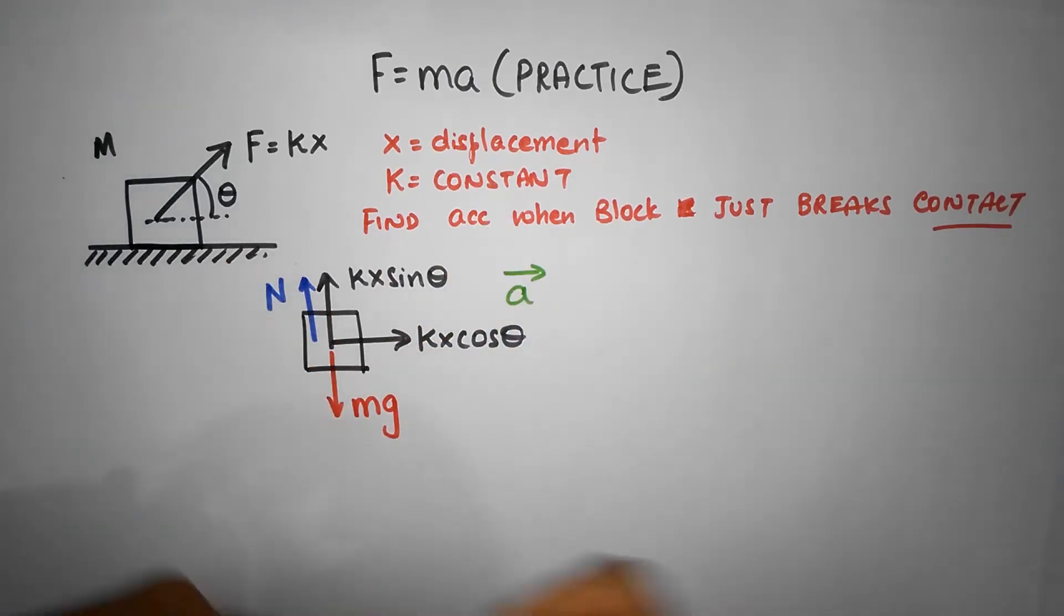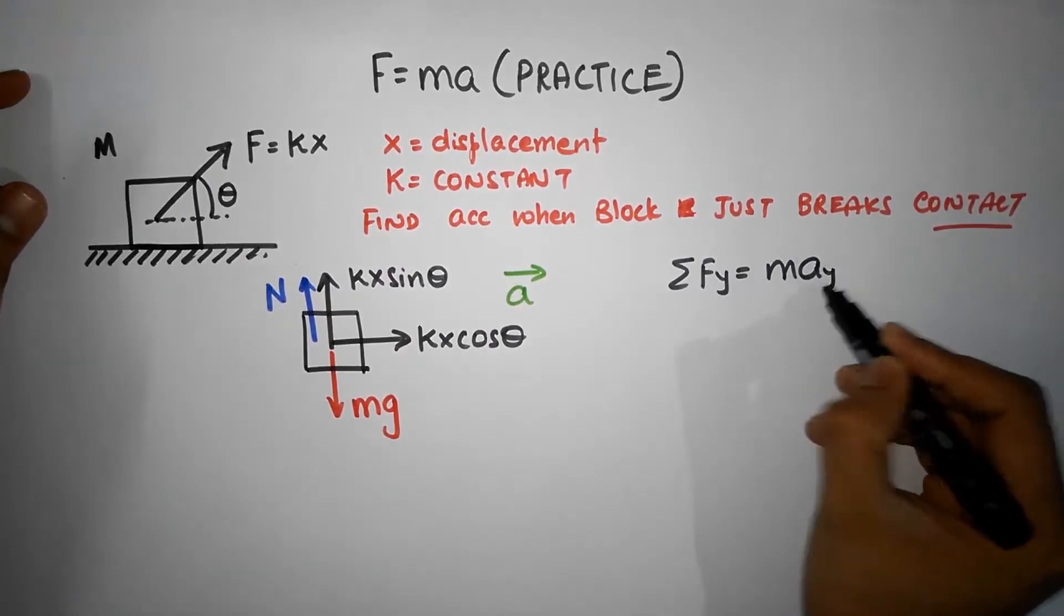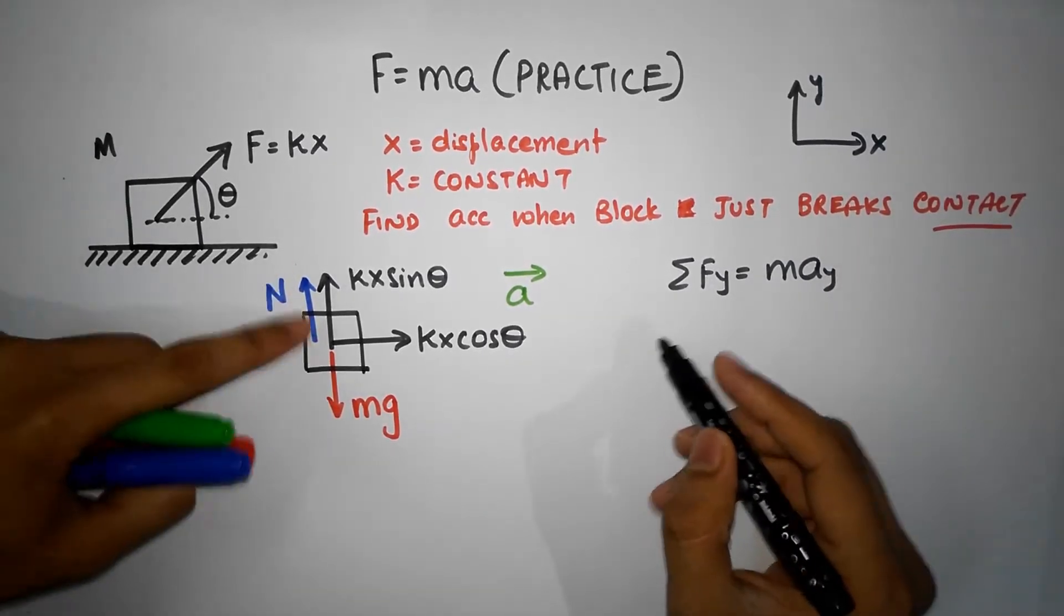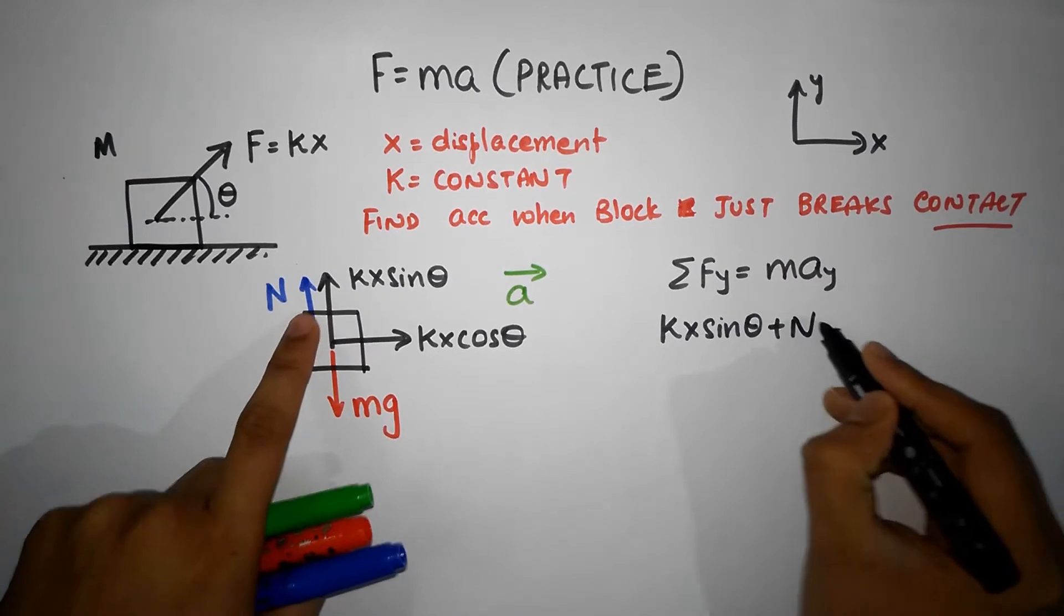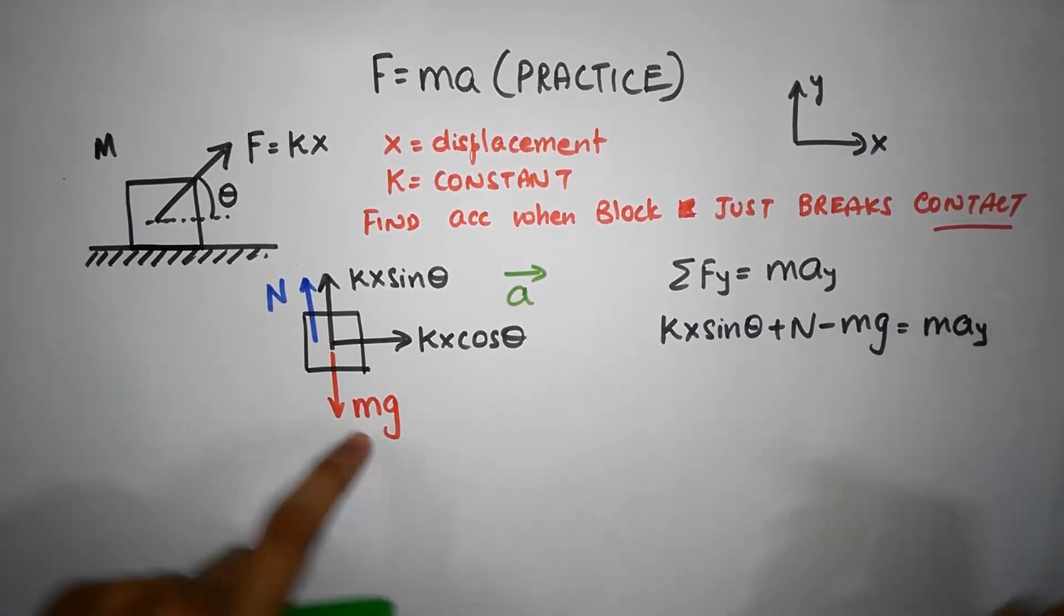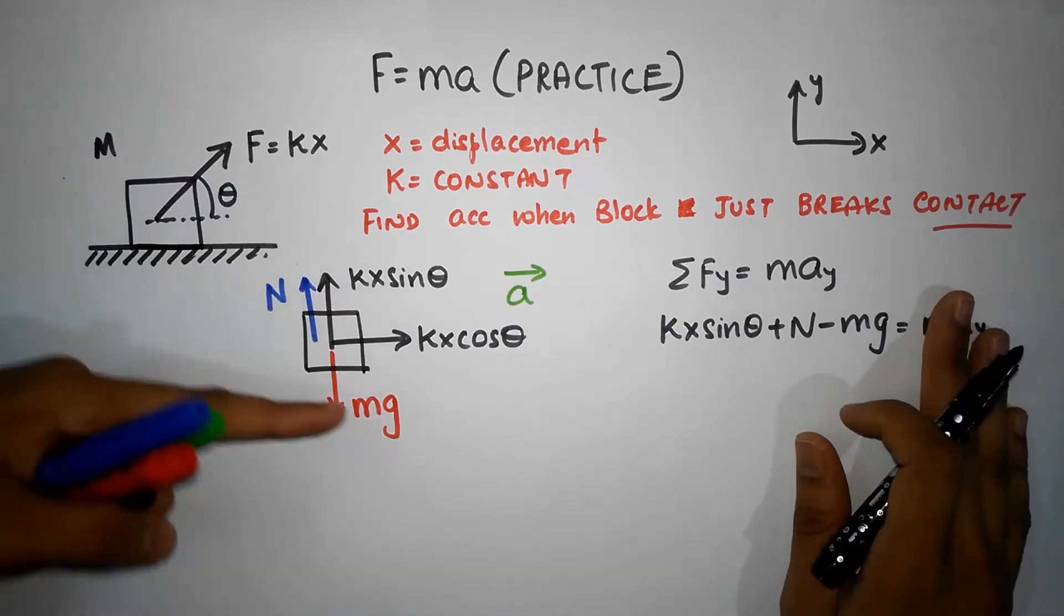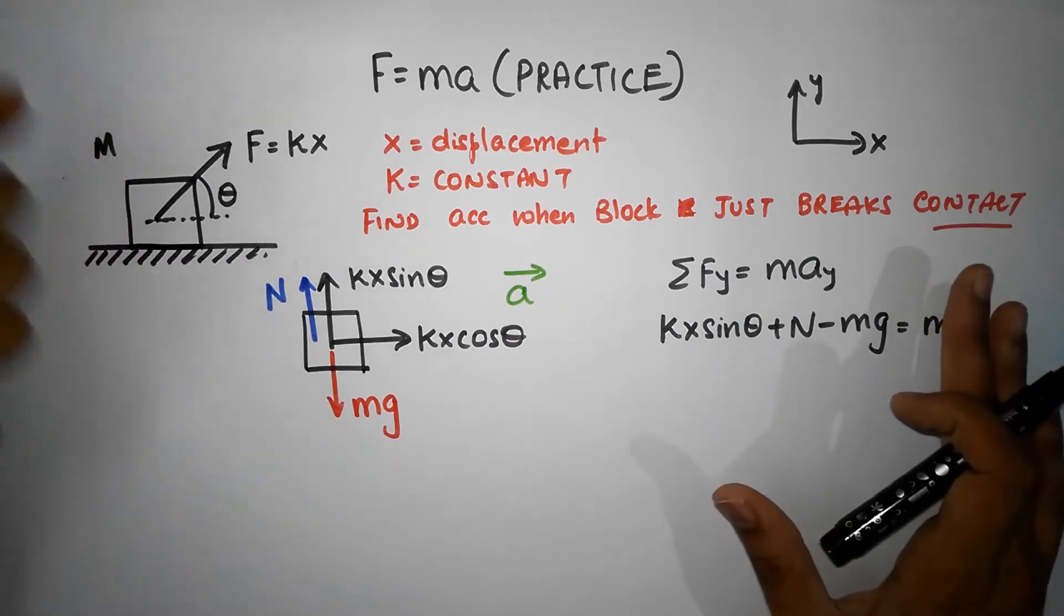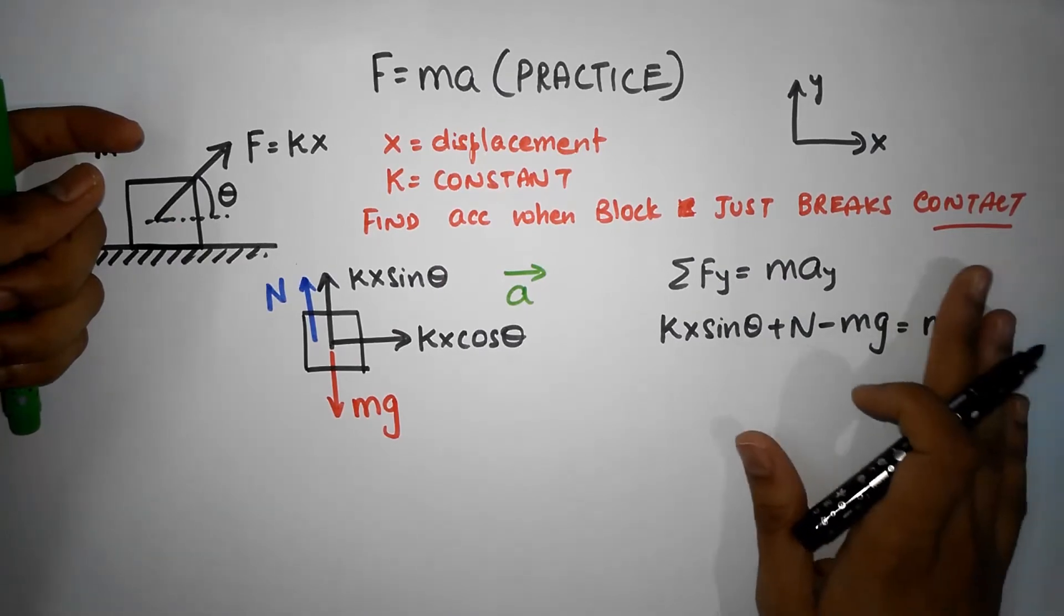If you look in the y direction, Sigma F_y equals m times a_y. I'm going to call this the y direction, this is my x direction. There are three forces acting: we have kx sine theta plus N minus mg, that should equal mass times acceleration along the y direction. Notice that acceleration along the y direction is zero as long as the block has not broken contact. When it just breaks contact, it's still zero. If I wait for another nanosecond, then it starts getting an acceleration, so the acceleration is zero.